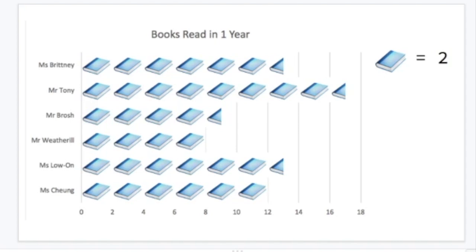So let's have a look at Mr Brosh. In this graph we would need to count two books for every picture of a book. So I'm going to go across the line, across the horizontal line from Mr Brosh's name, counting the books. We've got 2, 4, 6, 8, but then there's half a book.